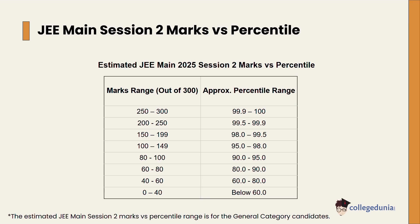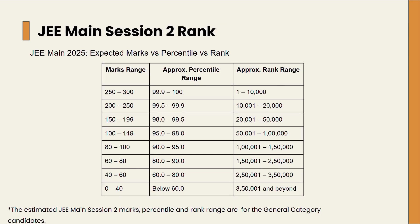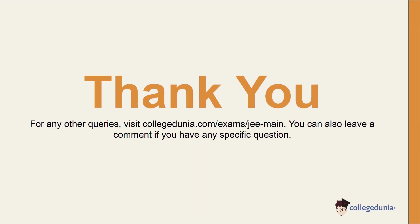Let's see the JEE Main Session 2 rank — this is also an expected rank based on previous year trends, estimated for general category candidates. A marks range of 250 to 300 corresponds to a percentile range of 99.9 to 100, which corresponds to an approximate rank range of 1 to 10,000. Thank you.